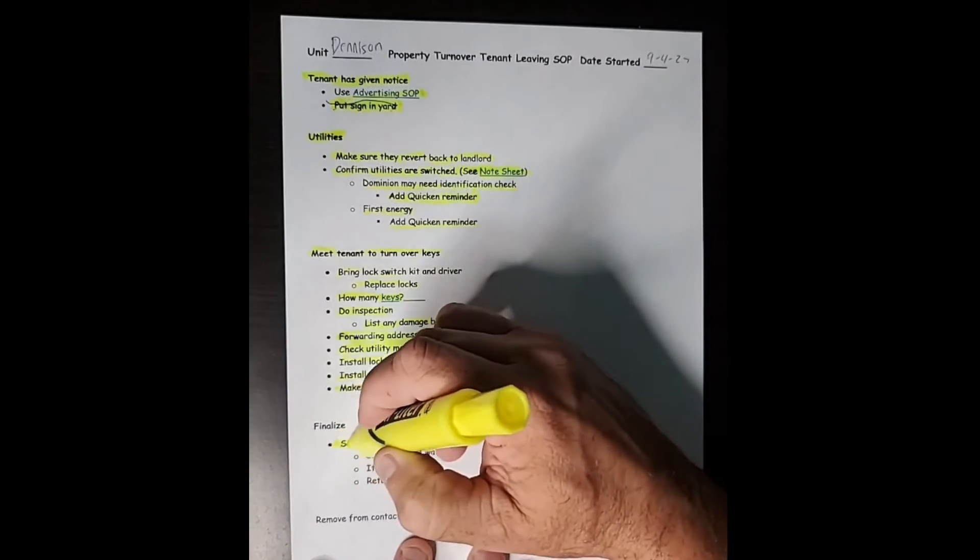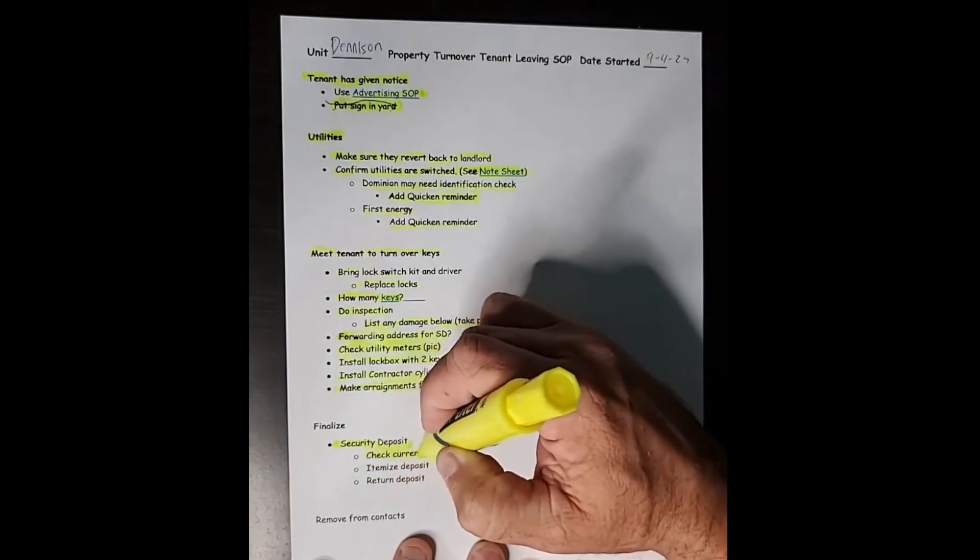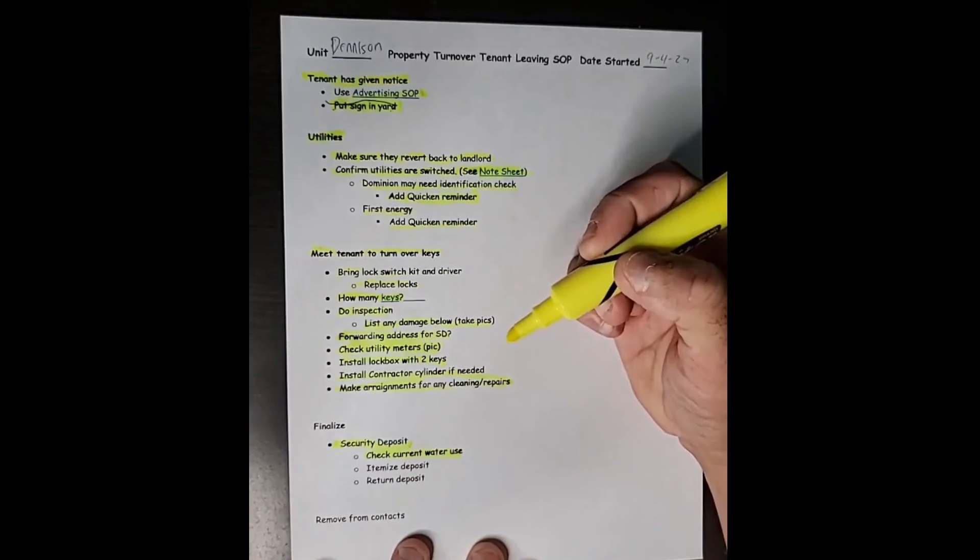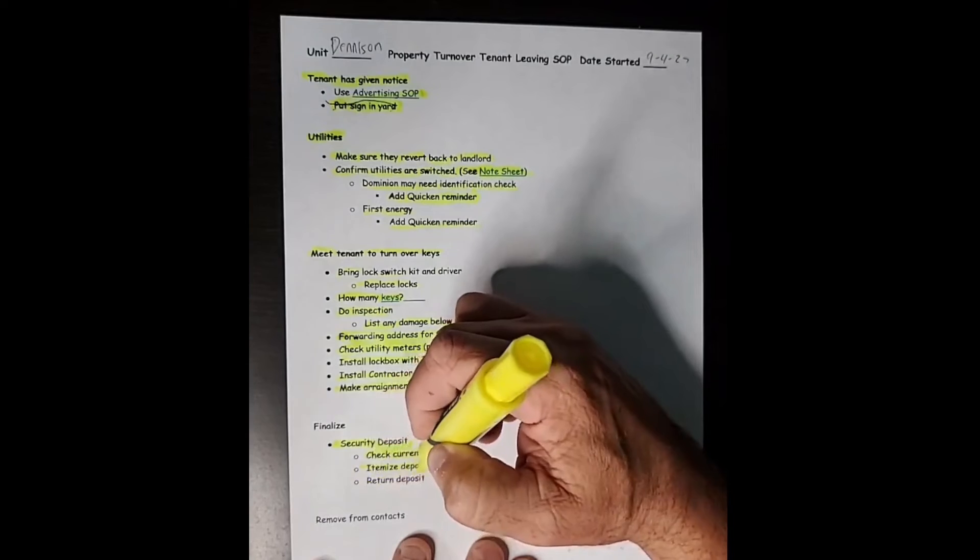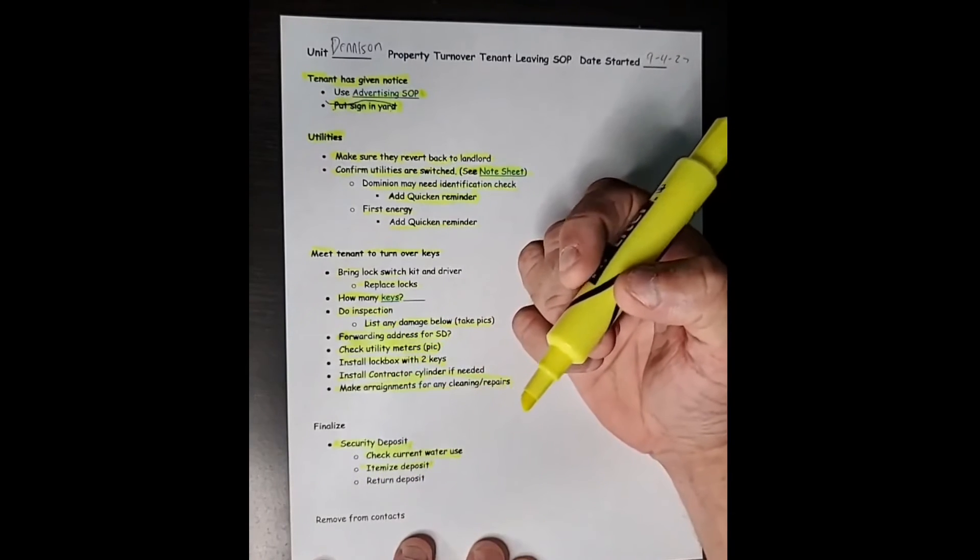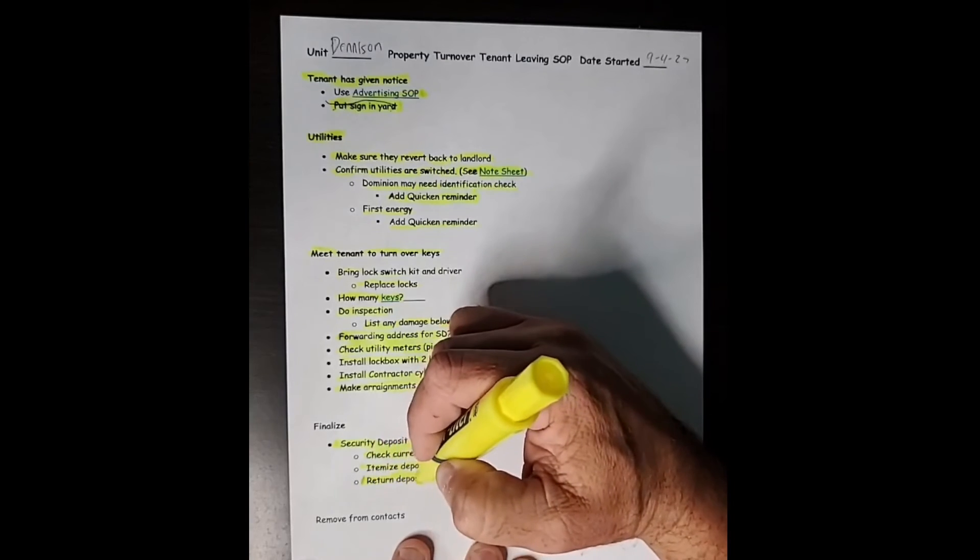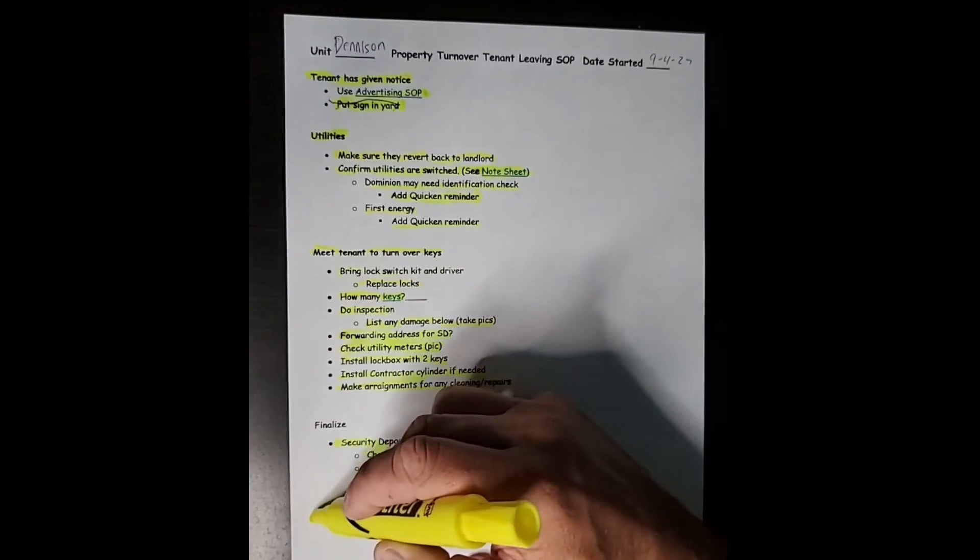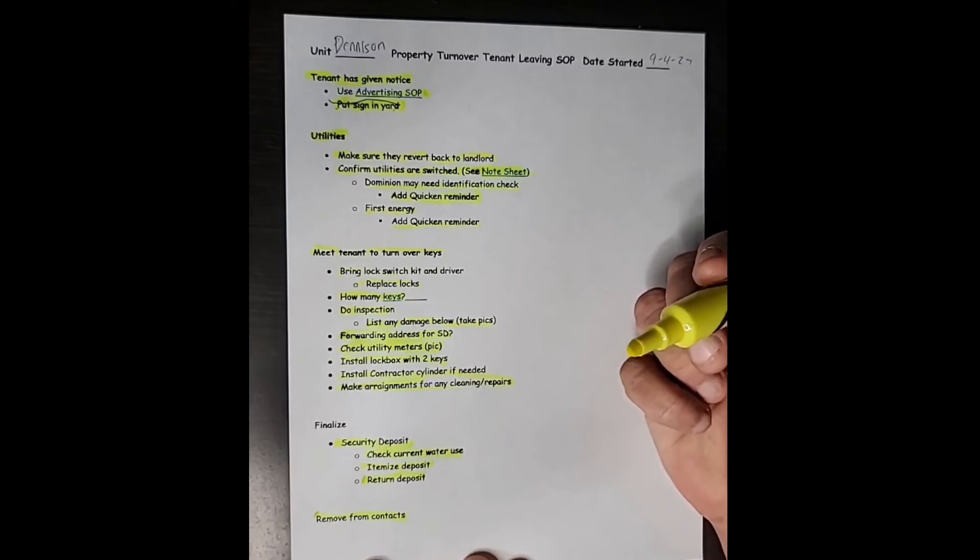For finalizing, I will send that security deposit out to that tenant after I've made sure that they have not ran up some humongous water bill for me to pay. I itemize the deposit if there's any damages that they are responsible for. And then I return that deposit. Finally, I remove them from my contacts and get ready to put the next tenant in.